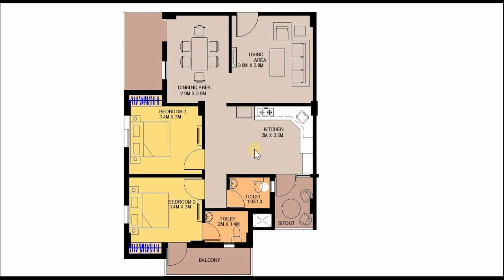Another layout type is the 2 BHK, and in this design I have taken the example of 90 square meters. The main door takes us to the common living room and dining room. There is a common passage of 1.2 meters wide leading to the master bedroom, which has a balcony and toilet, and the second bedroom measuring 3.4 meters by 3 meters. Both bedrooms are furnished with glass windows for air circulation and ventilation.